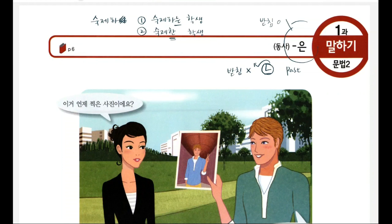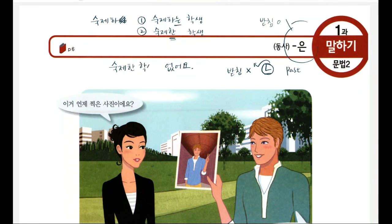Shall we expand it as a sentence? 'There's no student who did the homework': 숙제한 학생이 없어요. Subject: 숙제한 학생이. Verb: 없어요. Within the subject, 숙제한 modifies the real noun 학생. 됐죠?